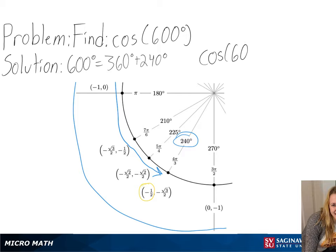So for cosine of 600 degrees, we will get negative one-half as our final answer.